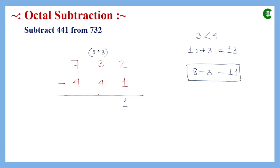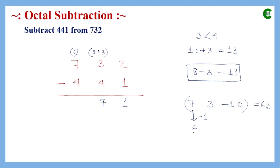Subtracting 4 from 11 gives 7. Since we borrowed 8 (the base), the digit we borrowed from is decreased by one — just as in decimal if we have 73 and borrow 10, it becomes 63, reducing that digit by 1. So 7 becomes 6 in that position.